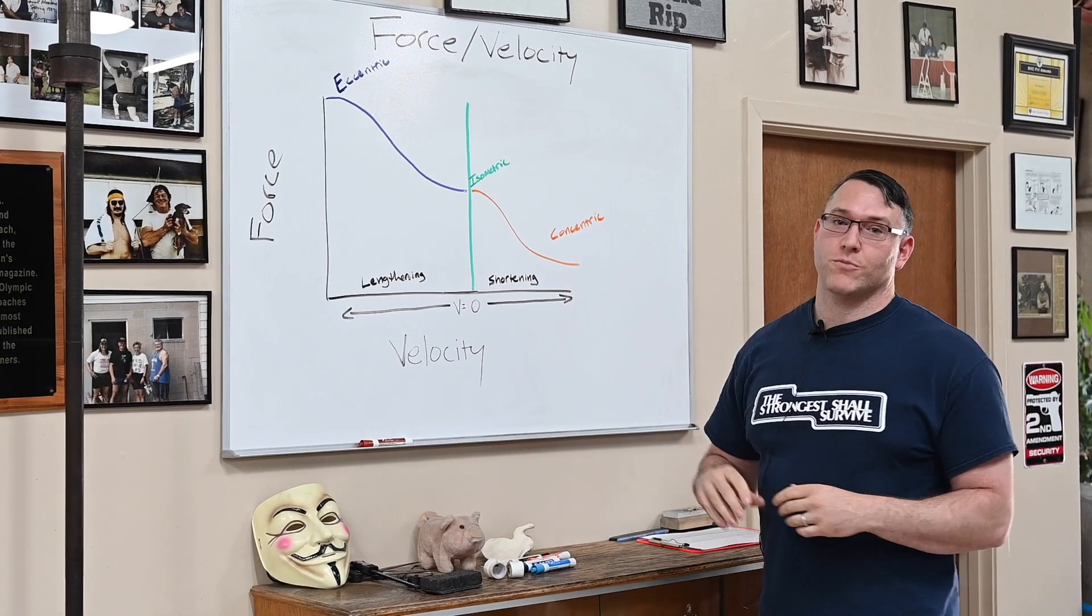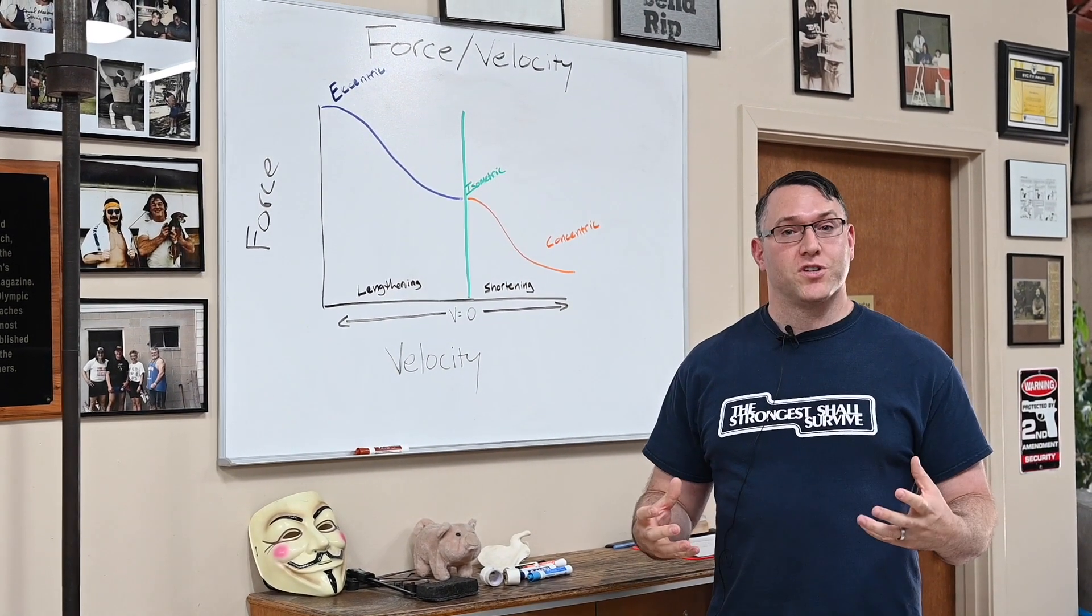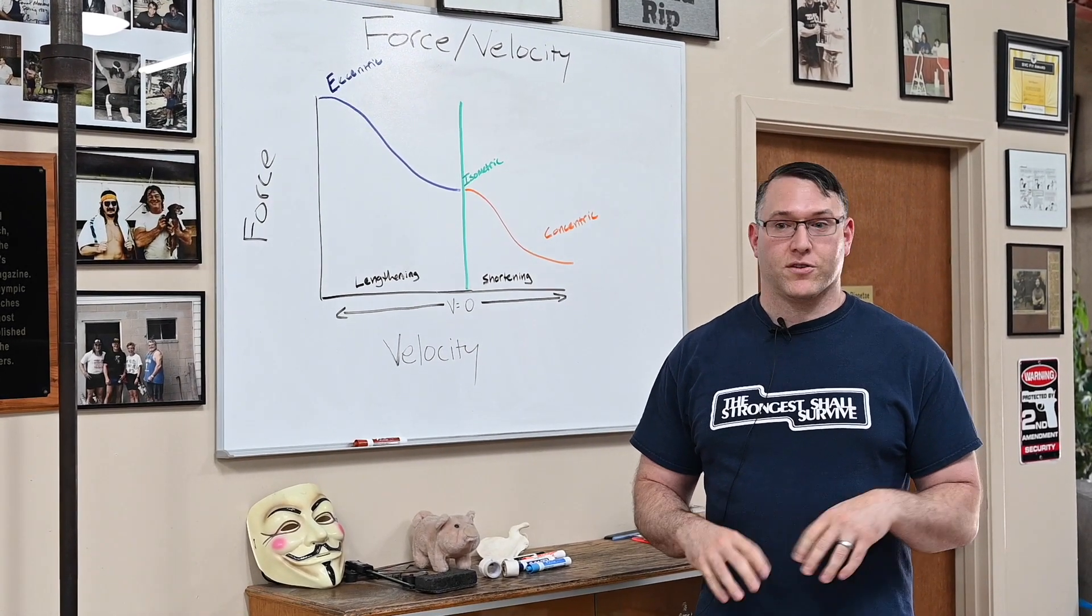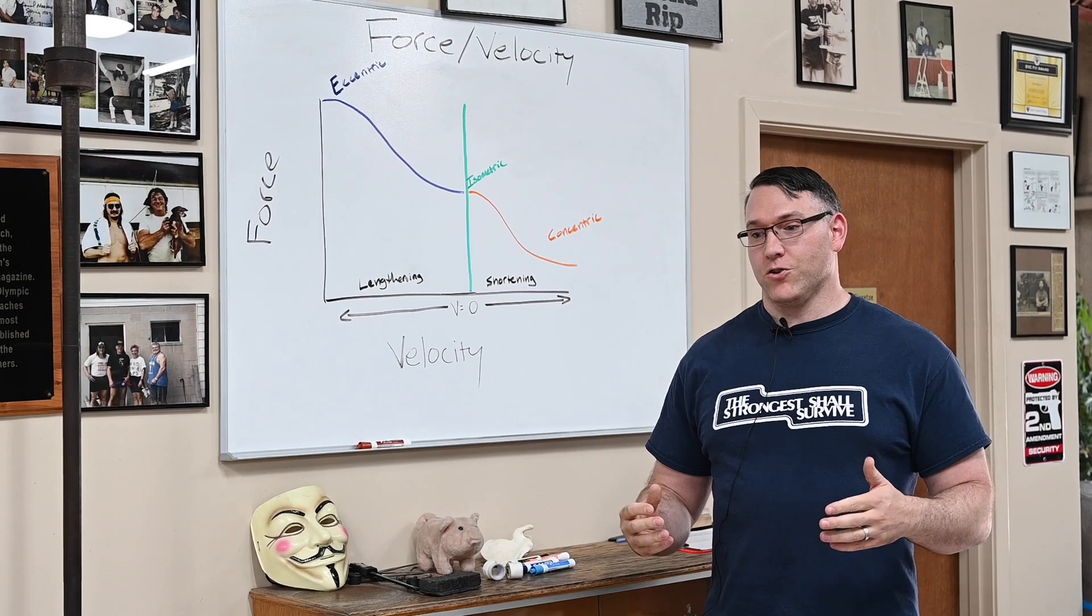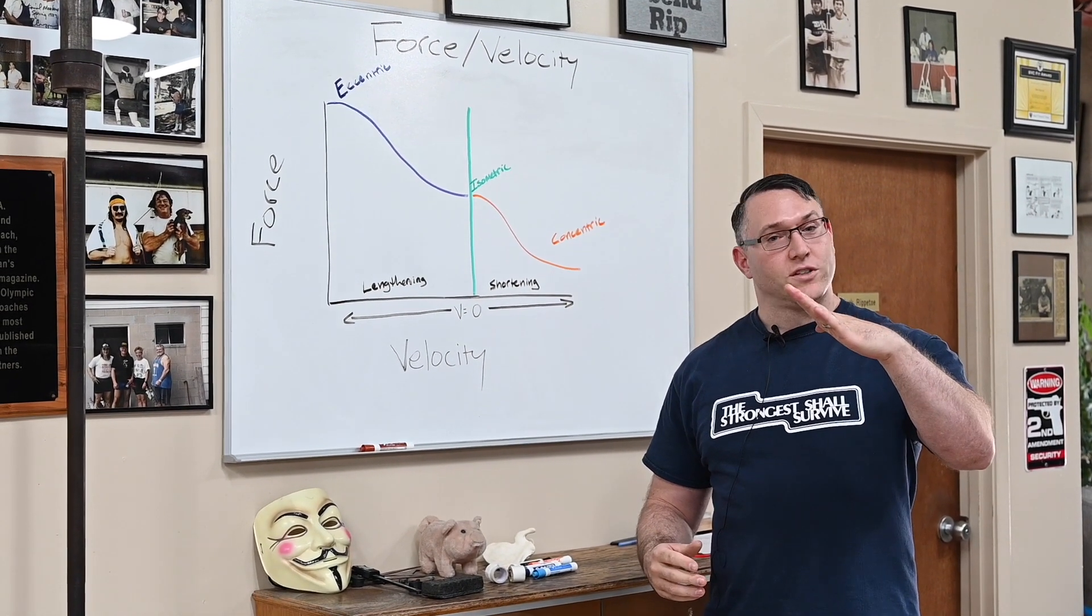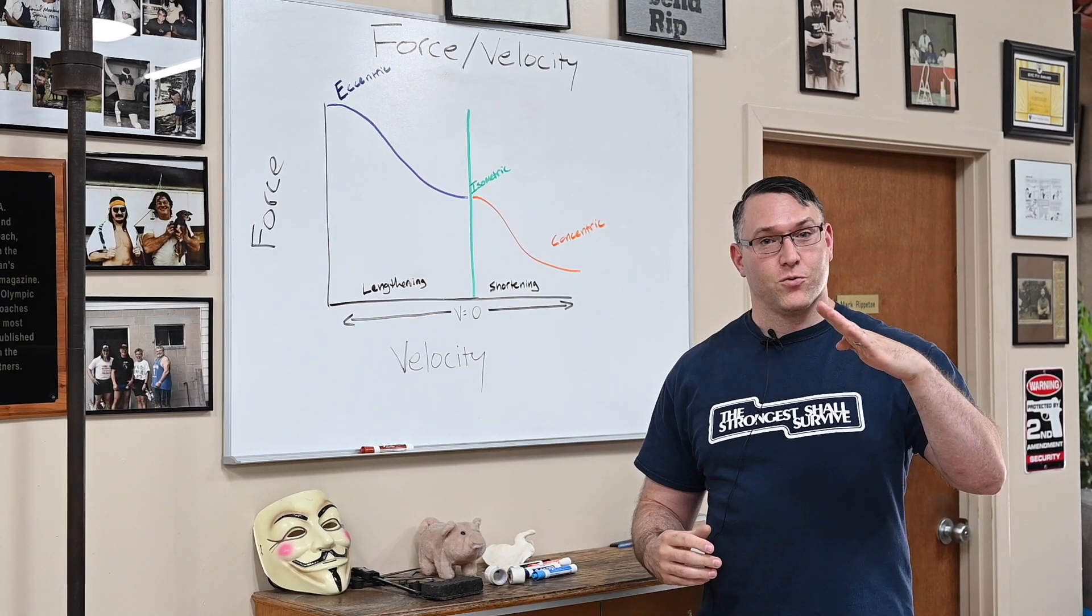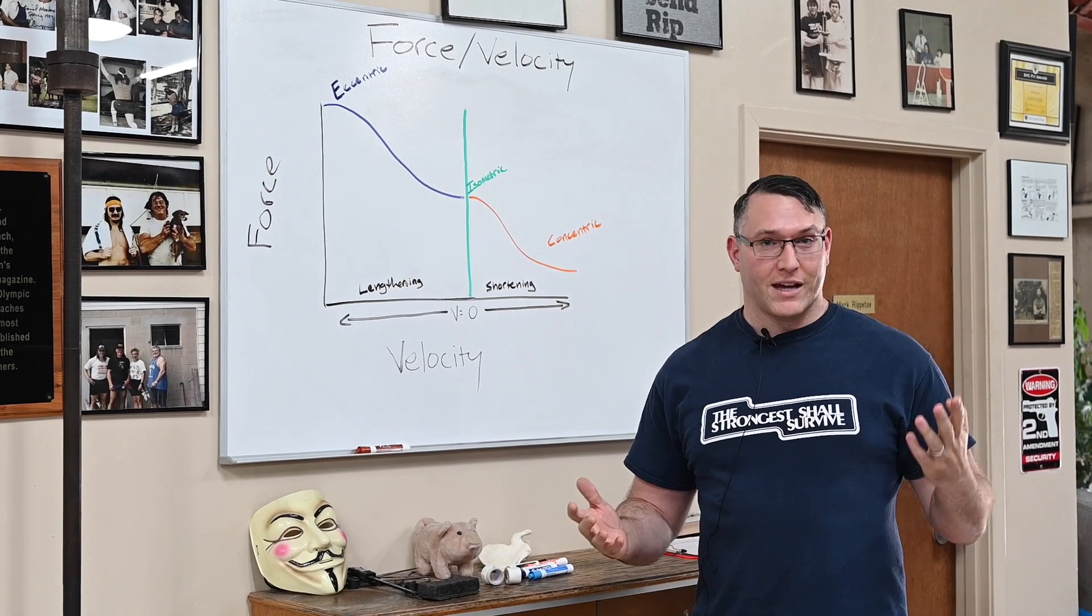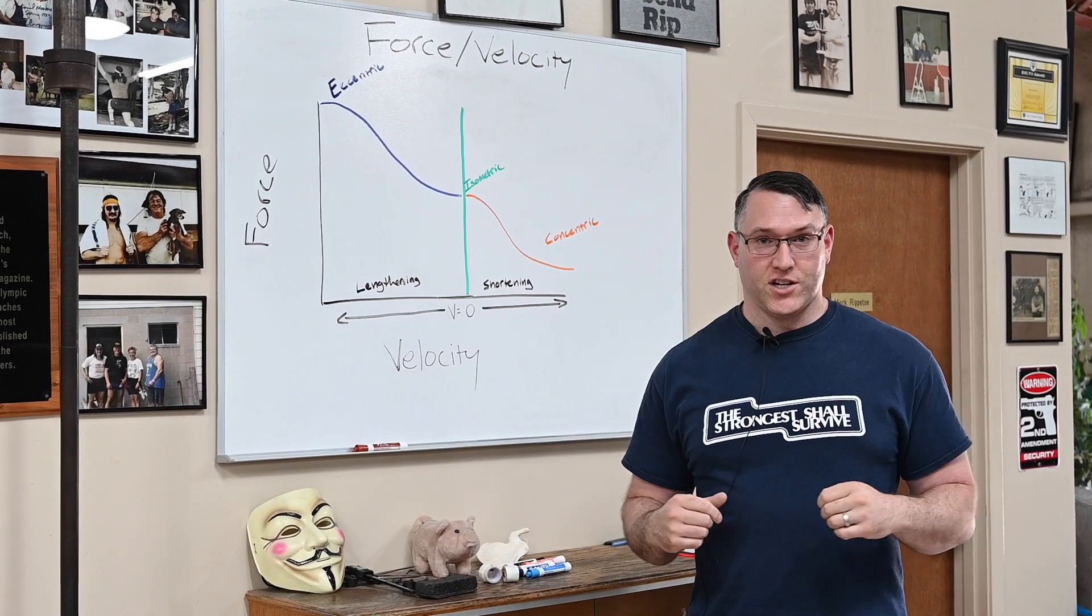An isometric muscle action is where the muscle is contracting, it's producing force, but there's no change in muscle length occurring. That would be like if you were coming up from your squat and you got stuck and you were holding that position for a few seconds while you tried to fight to lift the weight, all of the muscles that are trying to move the load would be working isometrically because they're no longer changing length.